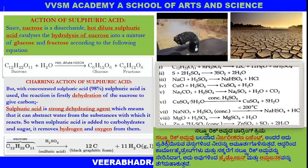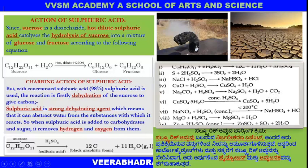Sulfuric acid is a very good, strong dehydrating agent. Dehydration is the removal of a water molecule from compounds. For example: sucrose plus sulfuric acid gives charred carbon. In other reactions: sulfur plus sulfuric acid gives sulfur dioxide and water; sodium chloride plus sulfuric acid gives sodium hydrogen sulfate and HCl. In almost all cases, water molecules are removed. This is the charring action of 98% concentrated sulfuric acid reacting with sucrose.